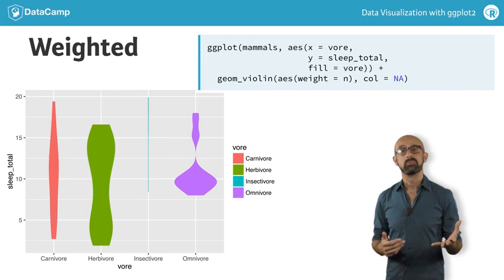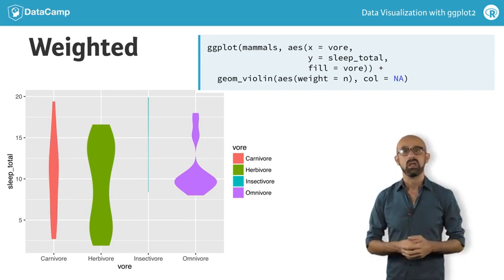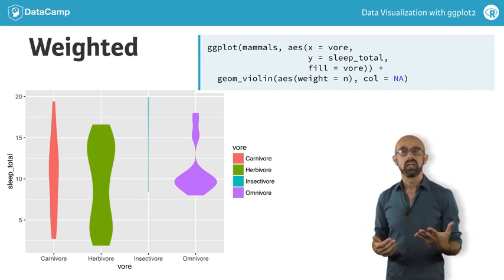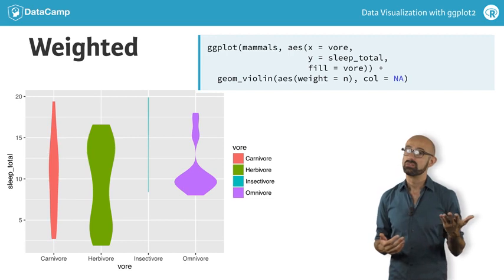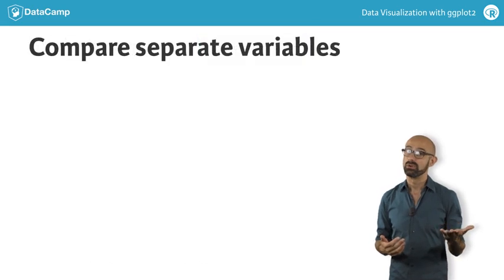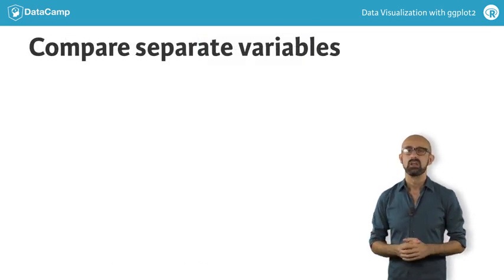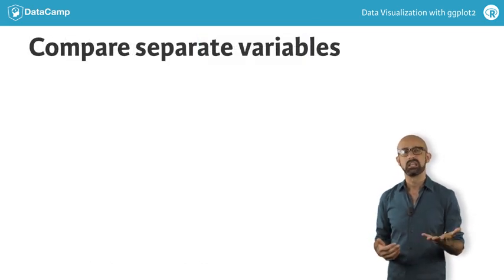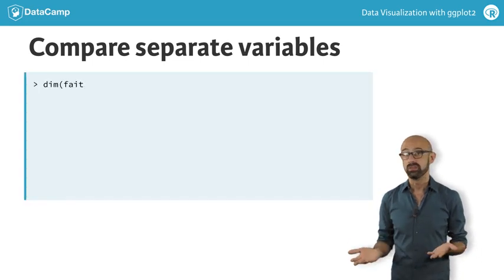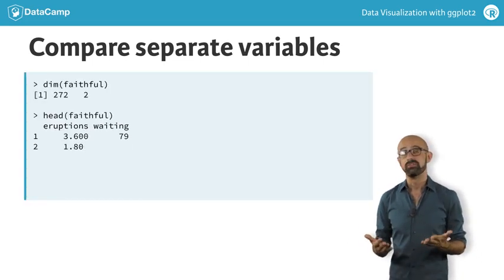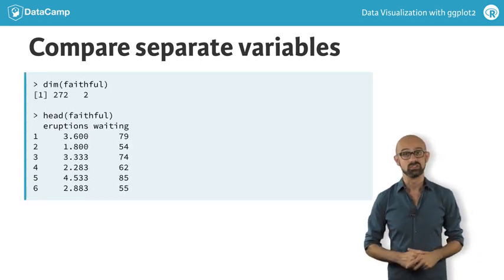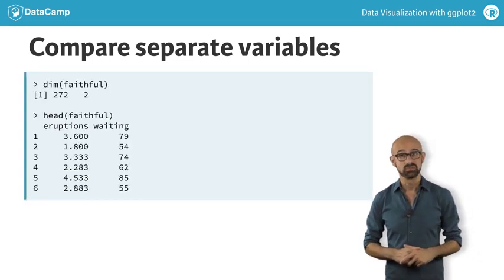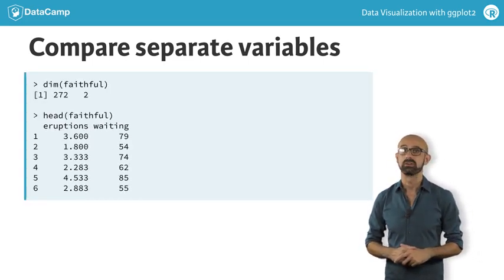With these plots, we can compare many groups within a variable. The other type of comparison I mentioned was to compare separate variables. For that, let's take a look at a classic example: the eruption time and waiting duration of the Old Faithful geyser in Yellowstone National Park.